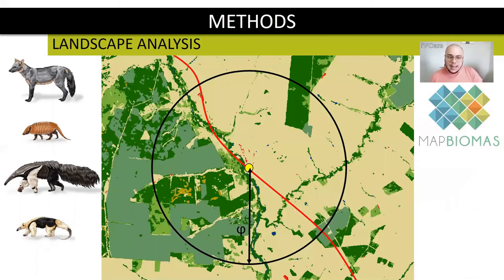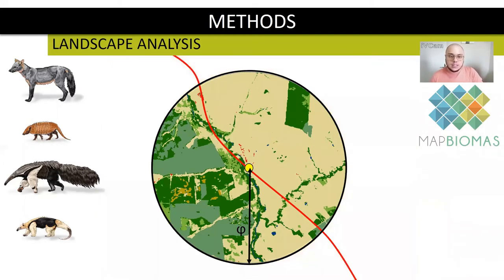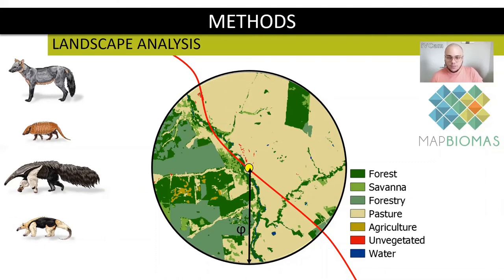For the landscape analysis, we used the data from MapBiomas initiative with pixel size of 30 meters. We considered the exact year of the roadkill for each occurrence. And we extracted a phi radius around all presence and absence of roadkill, searching for landscape composition in terms of forest, savanna, forestry, pasture, agriculture, and vegetated areas and water.